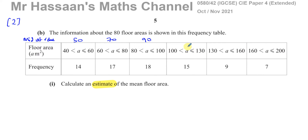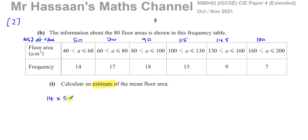The mid-interval values are: 70, 90, then for 100 to 130 it's 230 divided by 2 which is 115, then 145, and between 160 and 200 that's 360 divided by 2 which is 180. These are the mid-interval values. For the first group of 14 houses, we estimate the floor area to be 50 meters squared each — it's an estimate because we're not sure, but that's the best we can do.